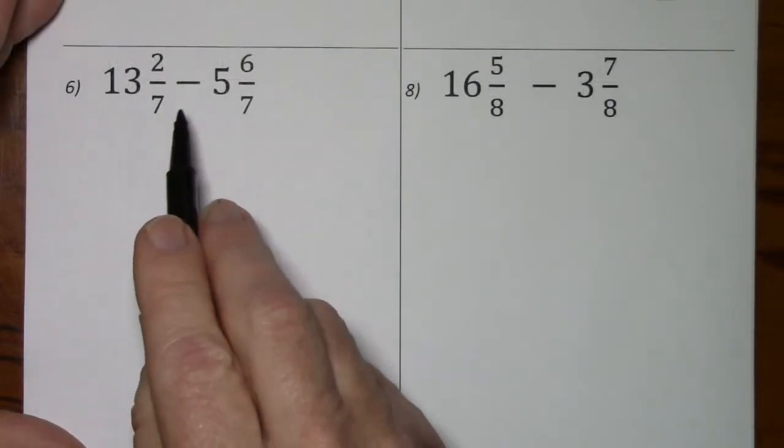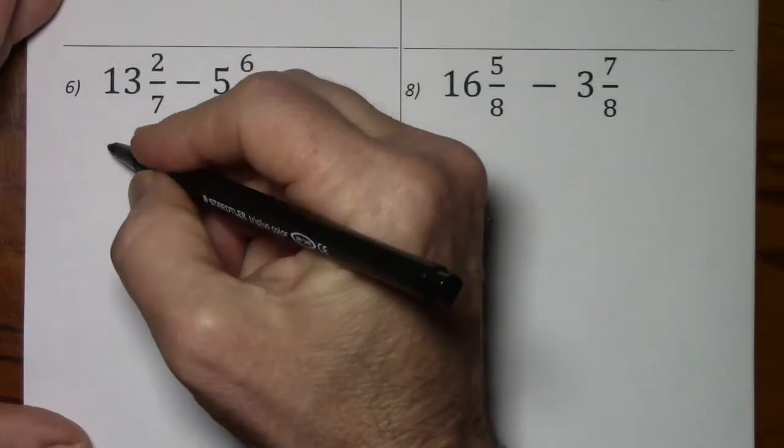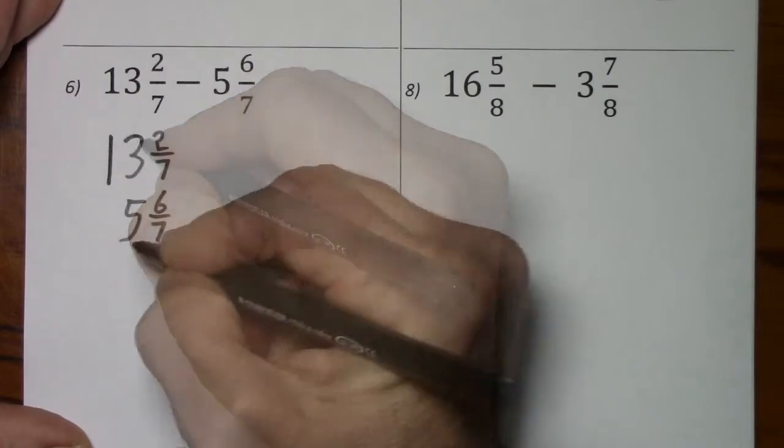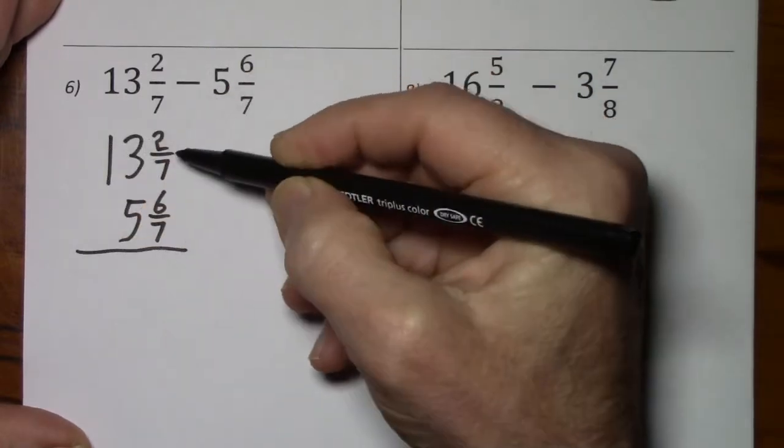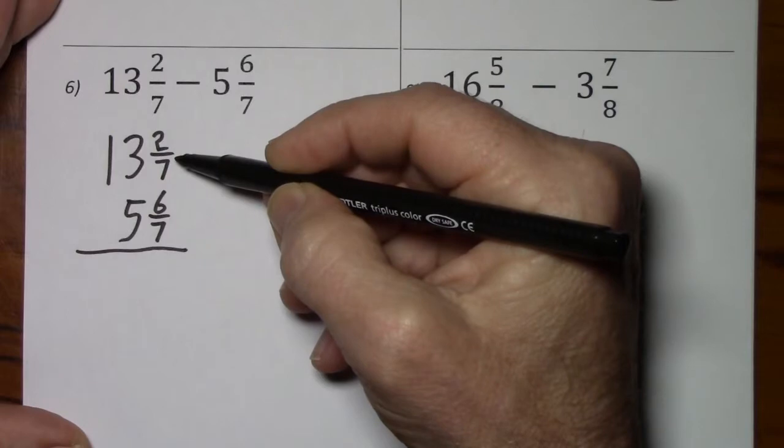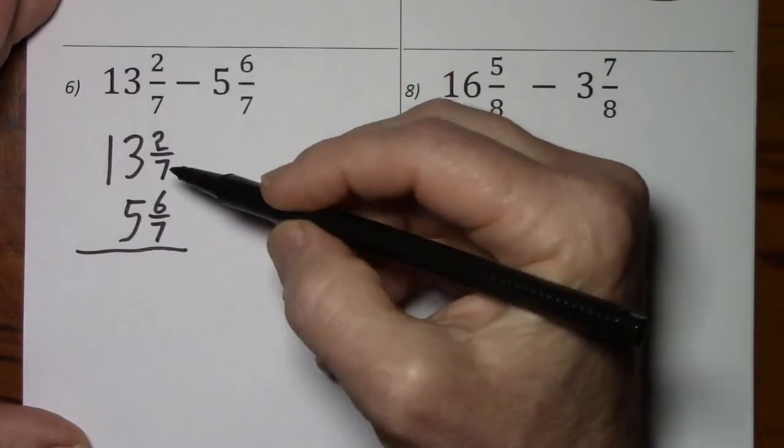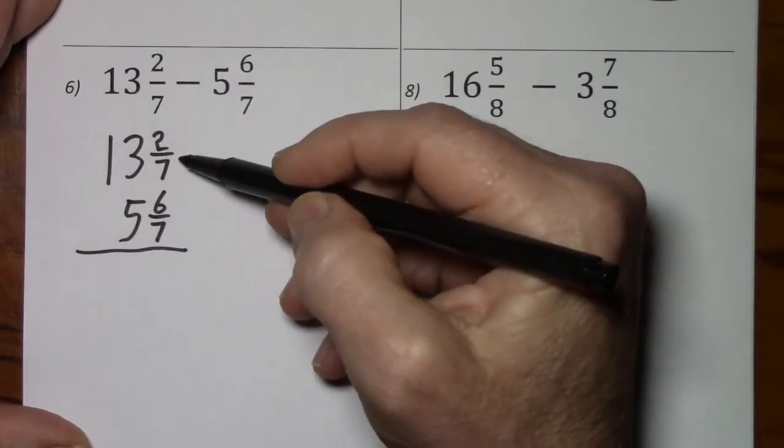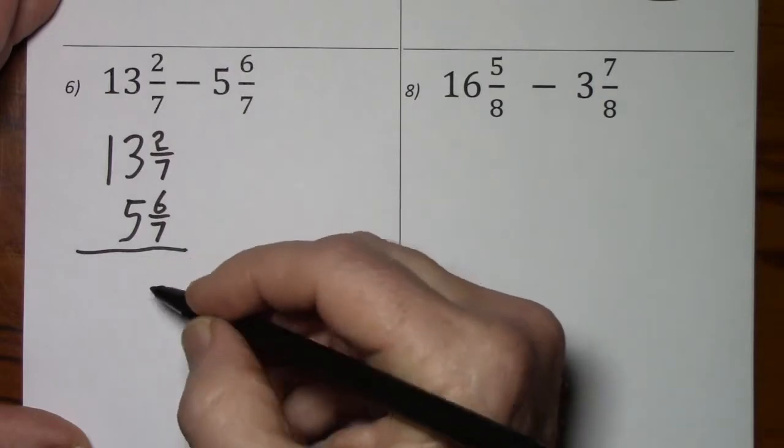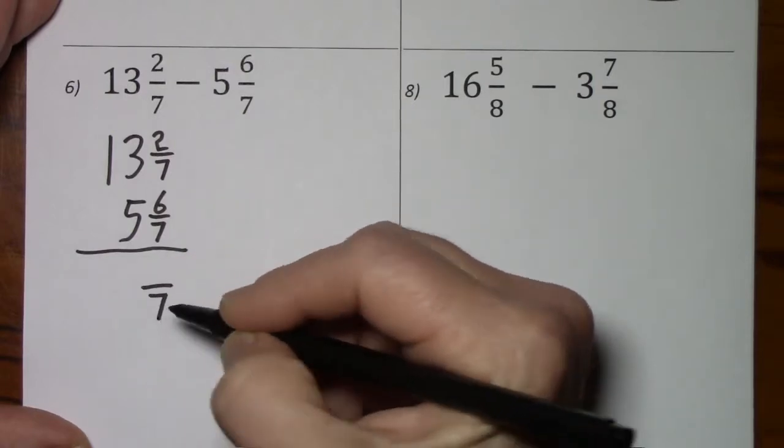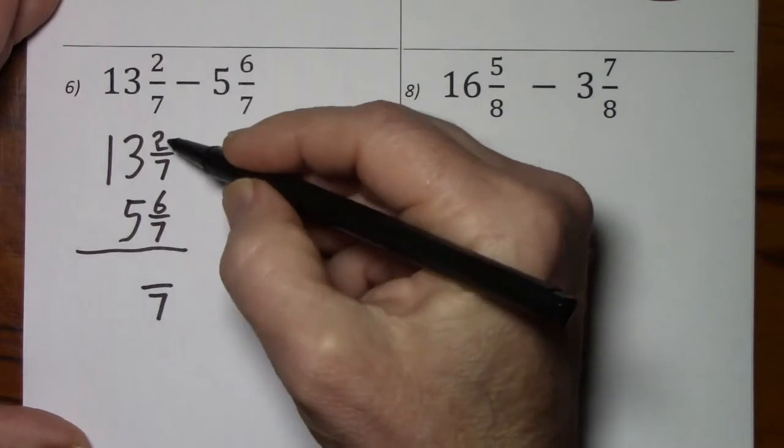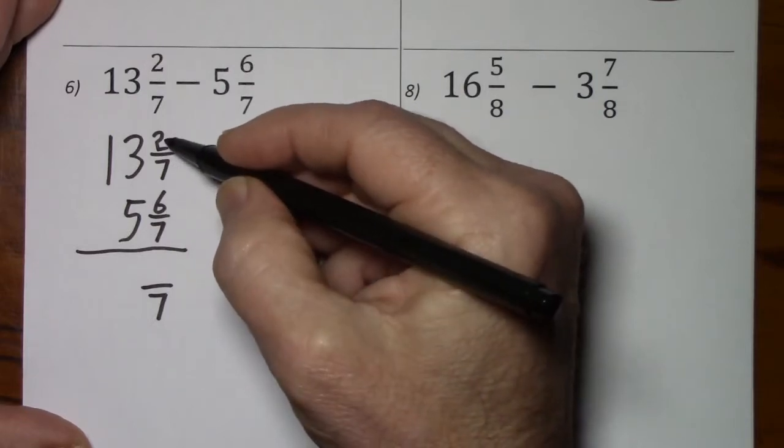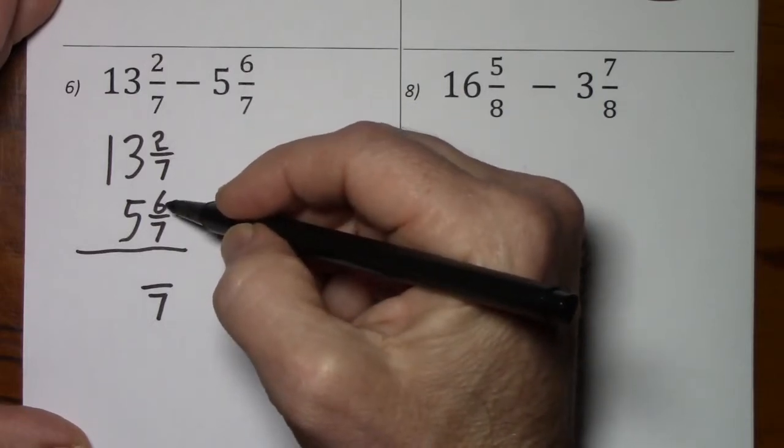Looking at this one, the signs are different, so we will be subtracting. Now I was careful to put the larger number on top. When you subtract, you always have to put the larger number on top. We have common denominators. But when we try subtracting the numerators, if you have 2, you can't take away 6.